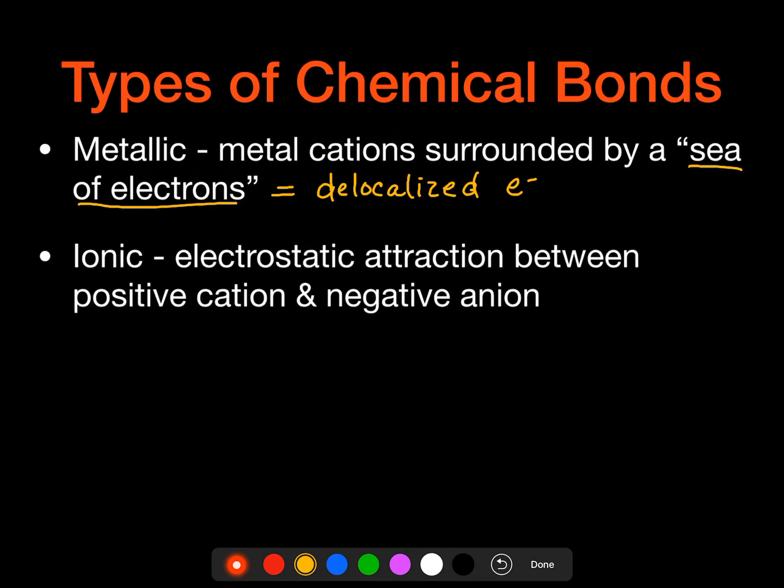Ionic, we have an electrostatic attraction between the positive cation and a negative anion. So the ions have to form first, and then because of the differential charge, they're going to go ahead and go through that bonding. So the positive and the negative is where we're getting that electrostatic attraction.